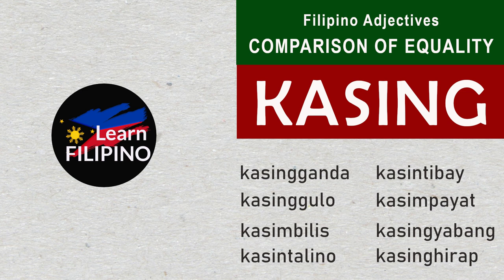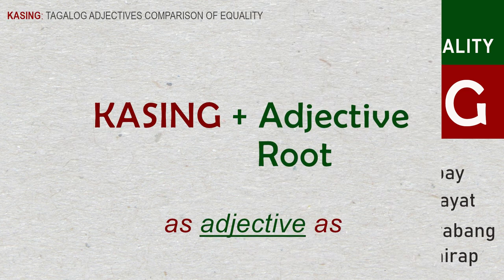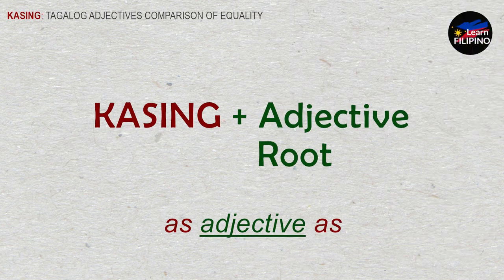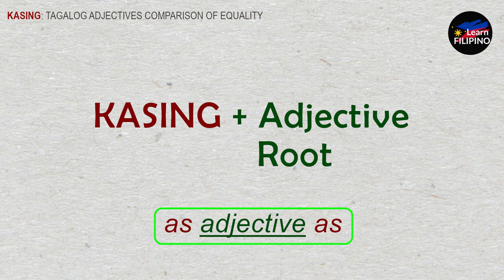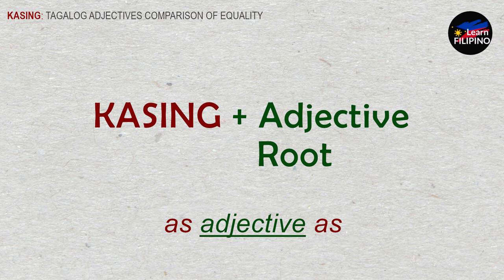Comparison of equality in Tagalog uses the prefix 'kasing'. In English, the expression of comparison of equality is done by using the 'as plus adjective plus as' construction. In Filipino, we use 'kasing' plus the root of a Tagalog adjective. So, 'as [adjective] as' is equivalent to 'kasing' plus the adjective root.